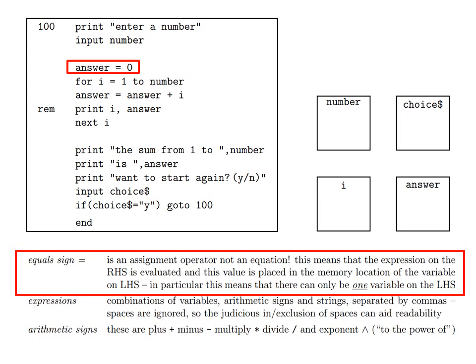For example, answer equals zero means take the value zero and place it in the memory location called answer. While answer equals answer plus i means add the contents of the memory locations answer and i, then place the resulting sum back in the memory location called answer. We shall see how these memory locations work in a bit more detail later.